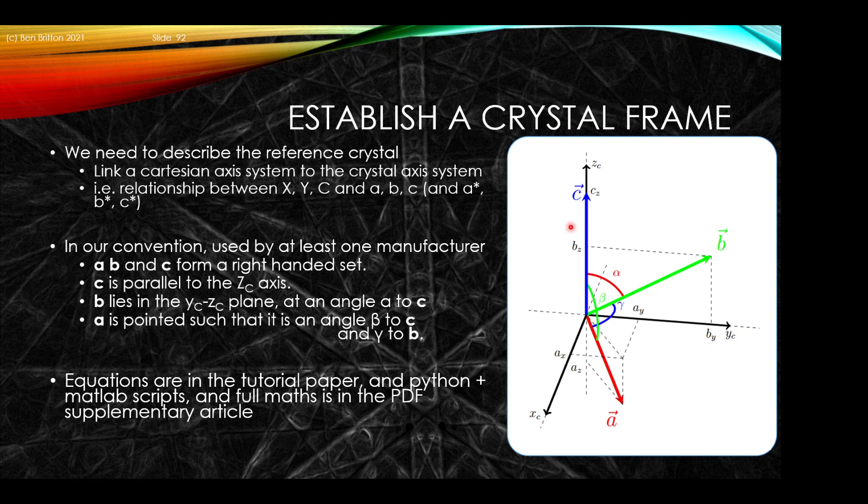B is lying in the Z_c, Y_c plane, so it's lying between the vector Y_c and Z_c at an angle alpha with respect to Z_c. And then A is at an angle beta with respect to C and an angle gamma with respect to B.